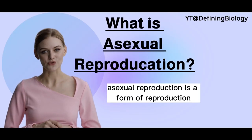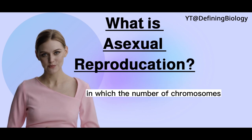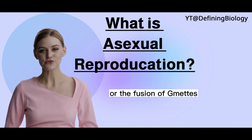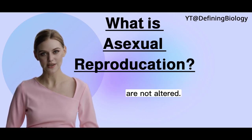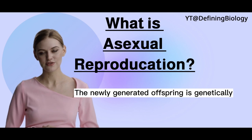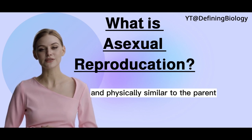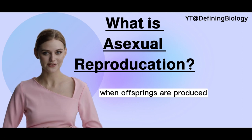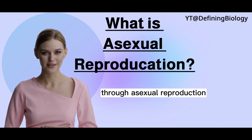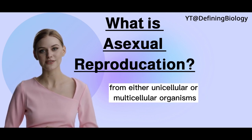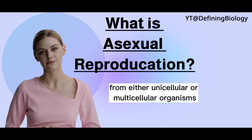Asexual reproduction is a form of reproduction in which the number of chromosomes or the fusion of gametes are not altered. The newly generated offspring is genetically and physically similar to the parent, or an identical clone of the parent, when offsprings are produced through asexual reproduction from either unicellular or multicellular organisms.